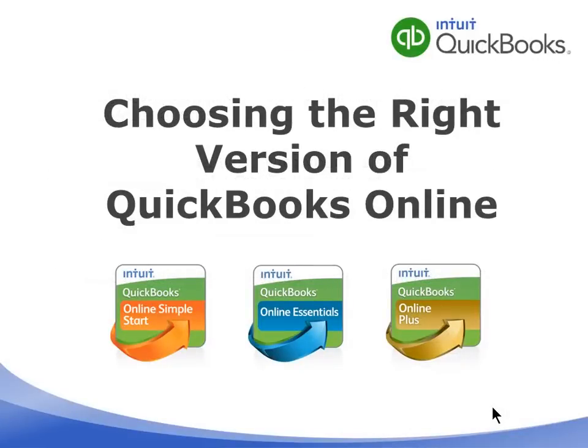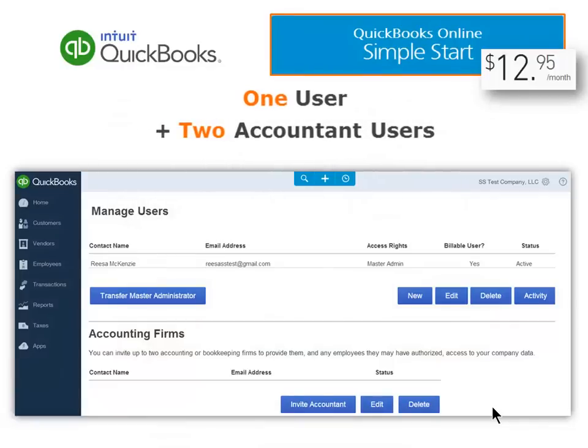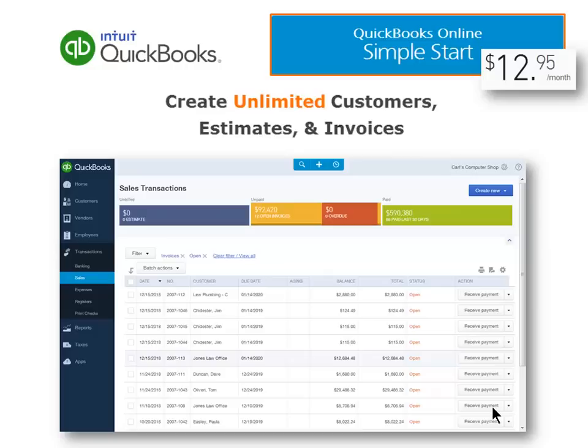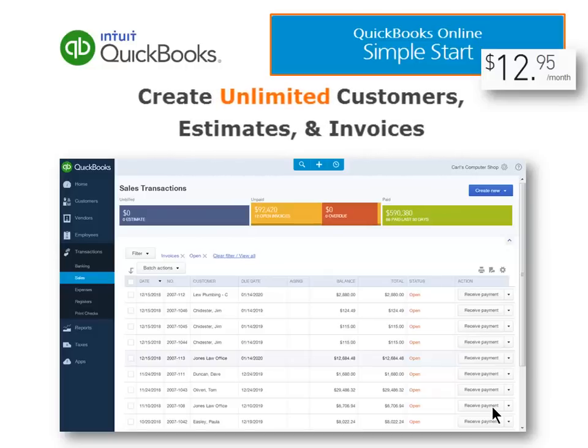Choosing the right version of QuickBooks Online. The starter level is called Simple Start. The base price for Simple Start is currently $12.95 per month. This includes one user and up to two accountant users. Simple Start is the ideal version for a new business that has really simple bookkeeping needs. You can create unlimited customers, estimates, and invoices with Simple Start. Other online software will limit the number of invoices you can create per month, but you will not have that limitation with QuickBooks Online.